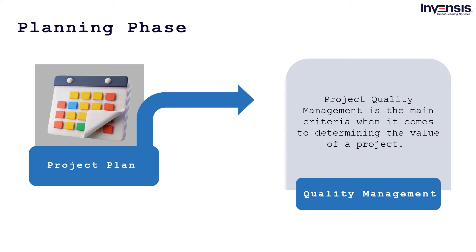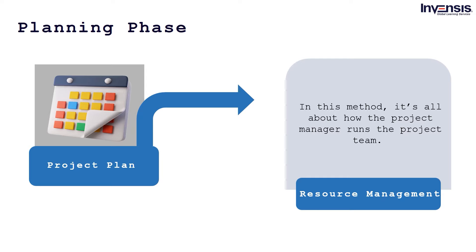Project quality management is the main criteria when determining the value of a project. The project is at all times required to meet the standards which were originally defined for it, and the quality must meet the needs of the stakeholders. Resource management is about how the project manager runs the project team — understanding what resources, people, equipment, facilities, and funding are required to complete the project, and then organizing a team to execute the work. This method concentrates on utilizing the desired resources to complete a project activity.